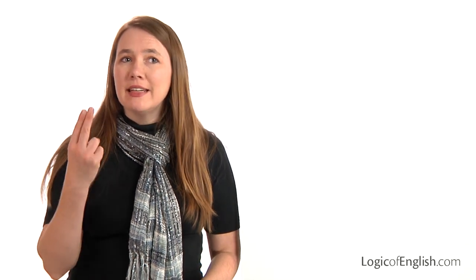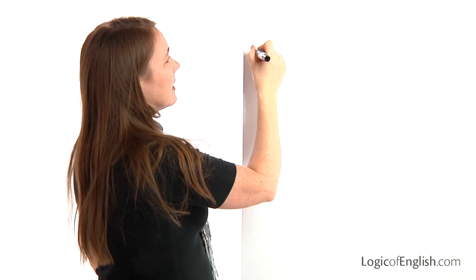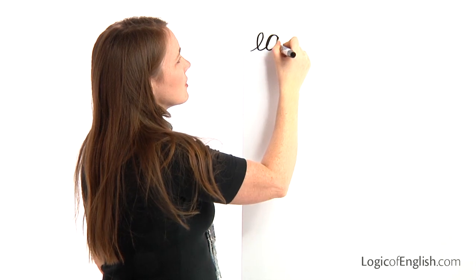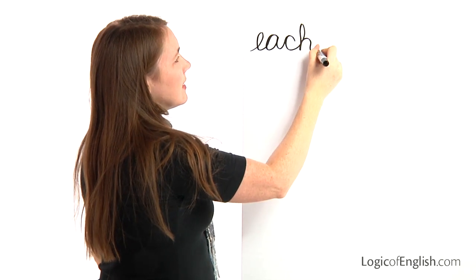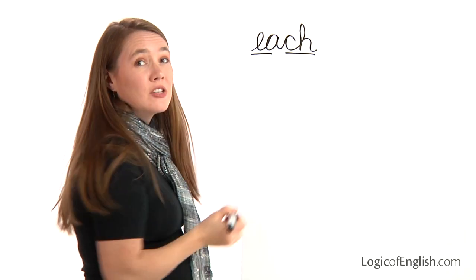The first word is 'each.' You will each need a copy. Let's sound it out: E, A, ch. Go ahead and write 'each,' sounding it out as you write. Now help me write it: E, ch. And how will we mark it? We'll underline the E and we'll underline the ch.